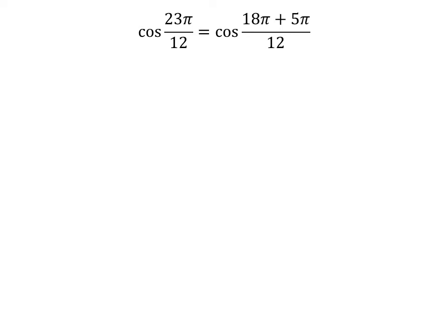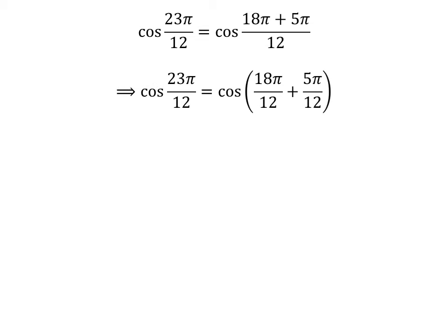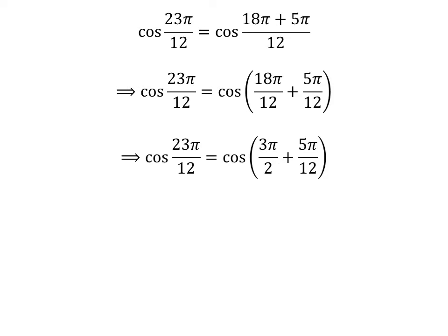23 times pi is equal to 18 times pi plus 5 times pi. So, cosine of 23 times pi upon 12 is equal to cosine of 18 times pi plus 5 times pi upon 12. The fraction can be written as a sum of two fractions, giving us cosine of 18 times pi upon 12 plus 5 times pi upon 12. Cancelling out the common factor in the numerator and denominator gives us cosine of 3 times pi upon 2 plus 5 times pi upon 12.